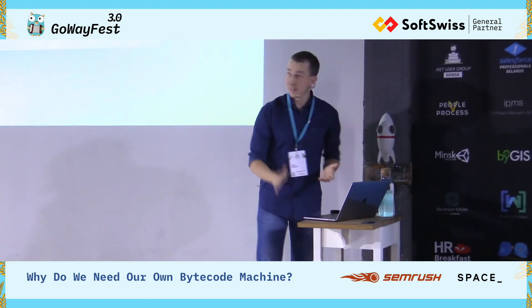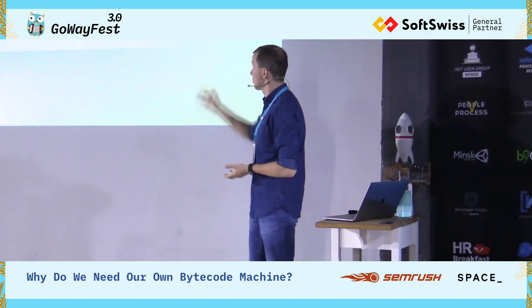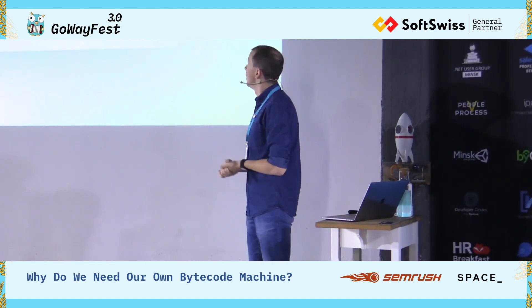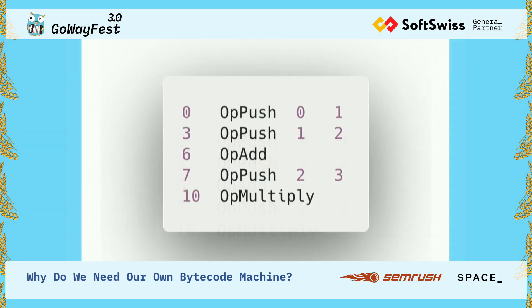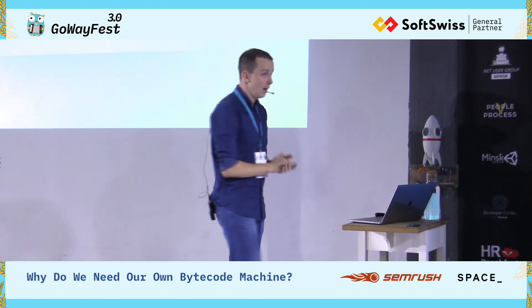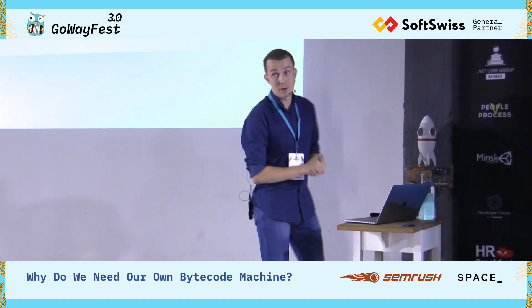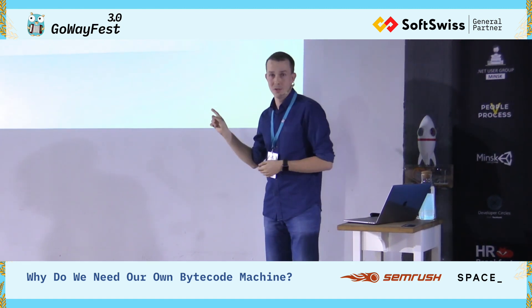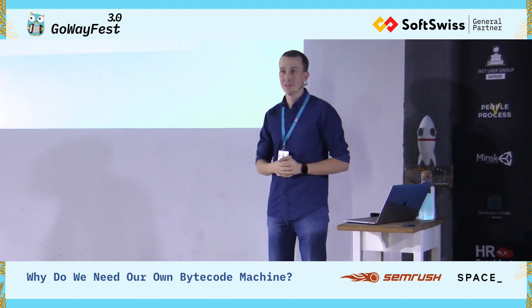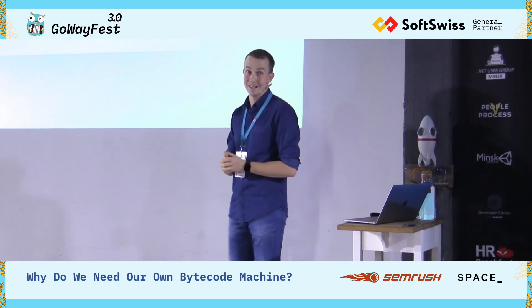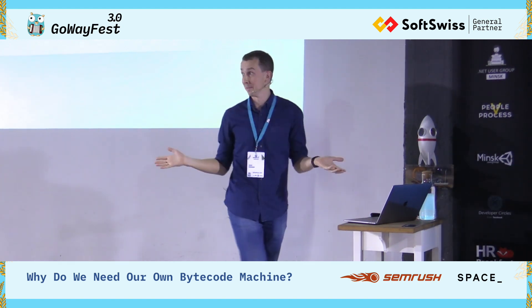Let's take a look at our bytecode — it's rather simple. Push one on stack, push two on stack, add them. Push three on stack, push three on stack, multiply — and you get nine on top of the stack. After converting to such a bytecode machine, performance increases from two to ten times. This is amazing.